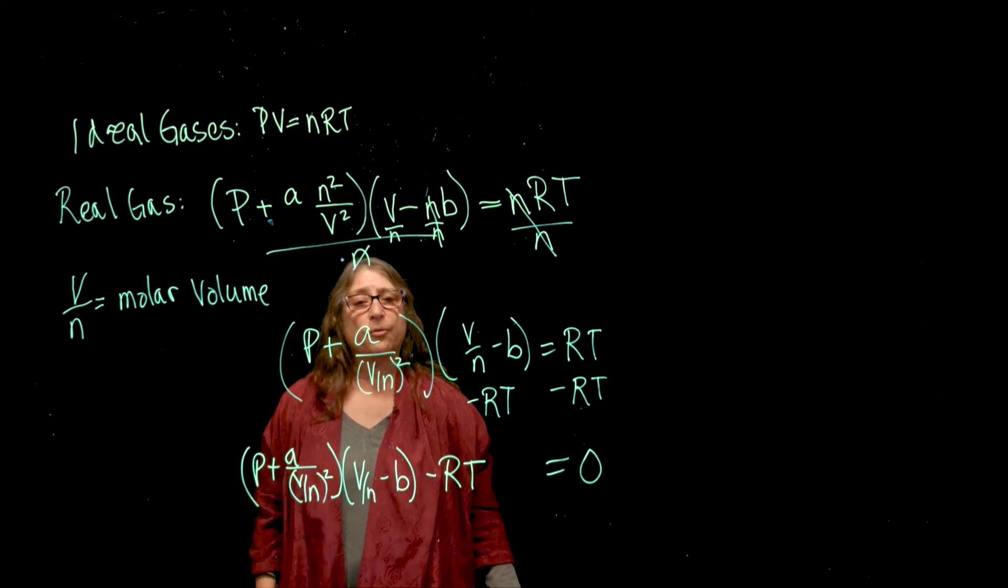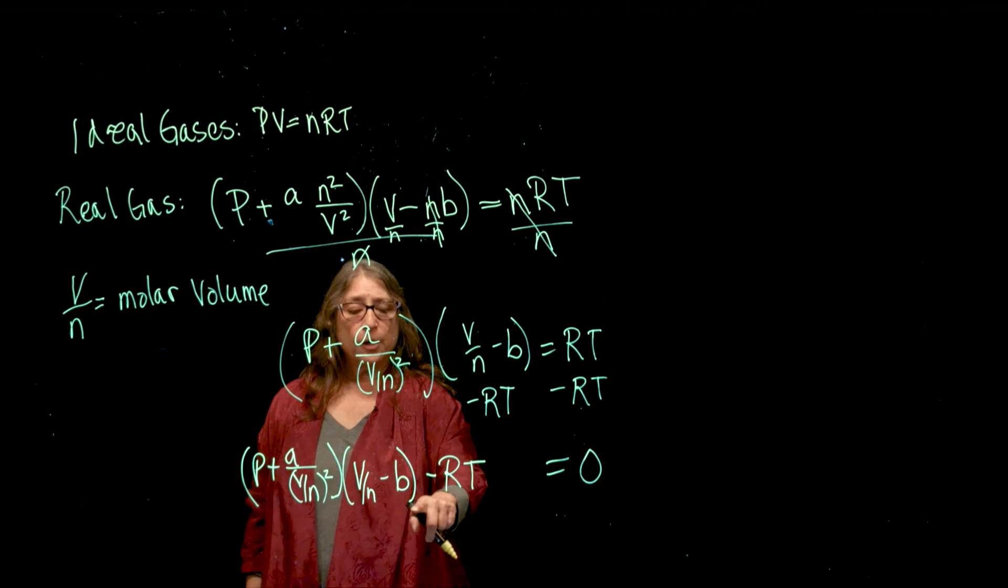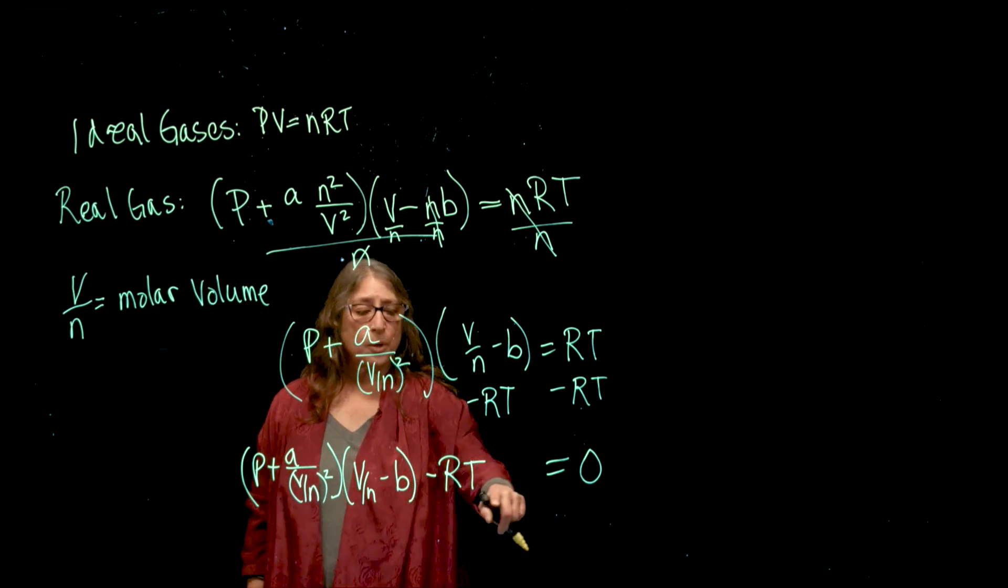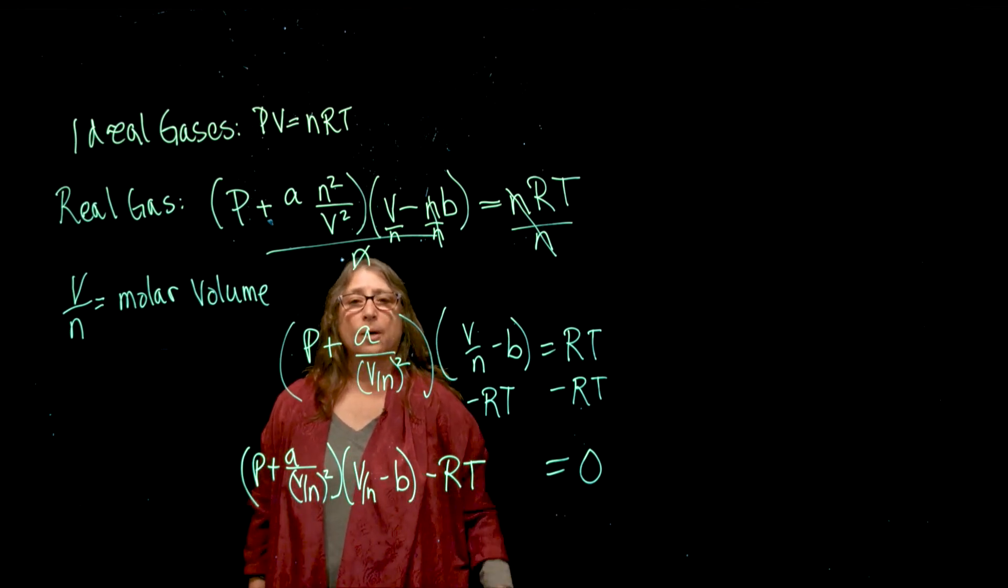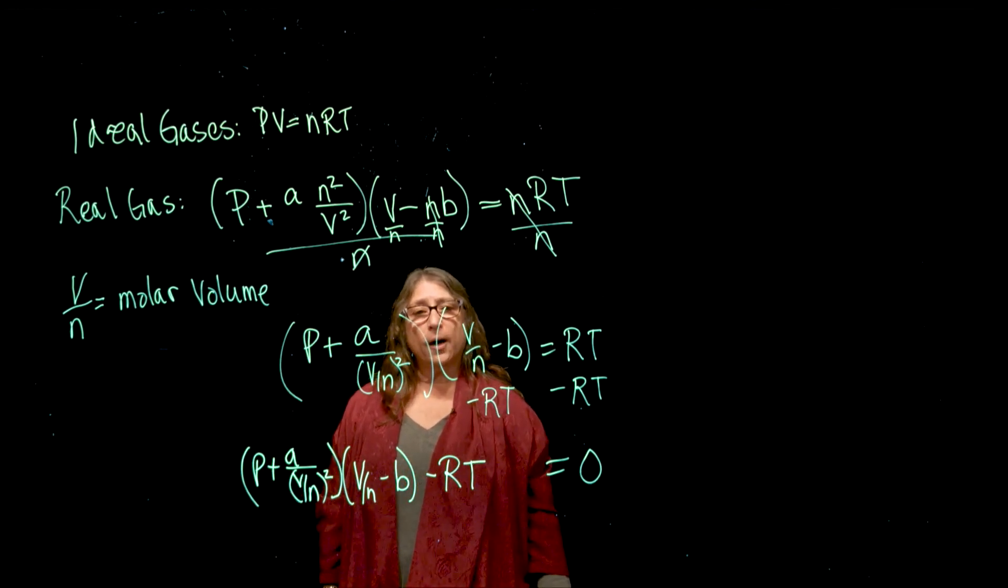I'll use that as my starting point for a guess and check to figure out what value of V over n in this expression will equal 0. Check the carbon dioxide Excel file for the solution to this.